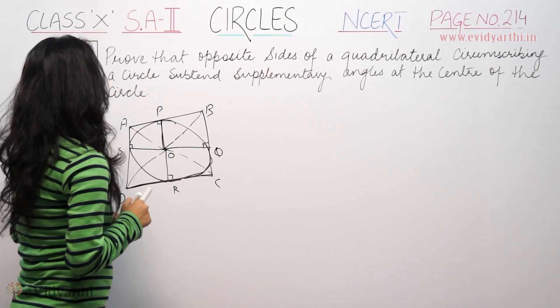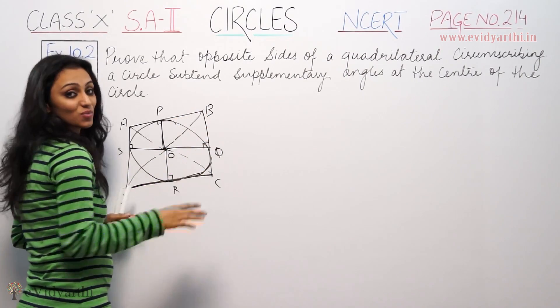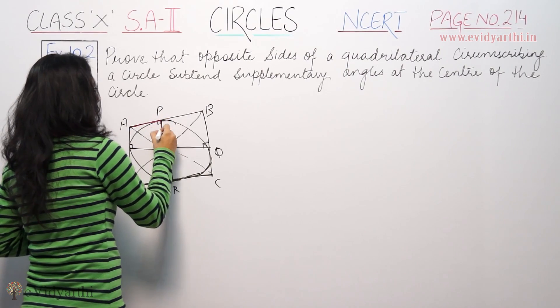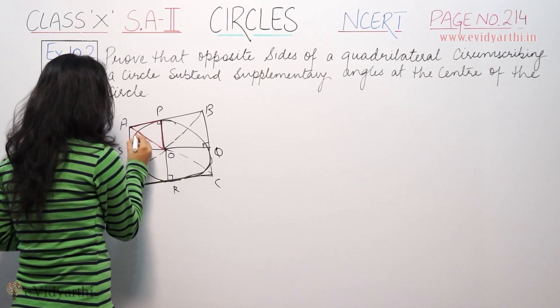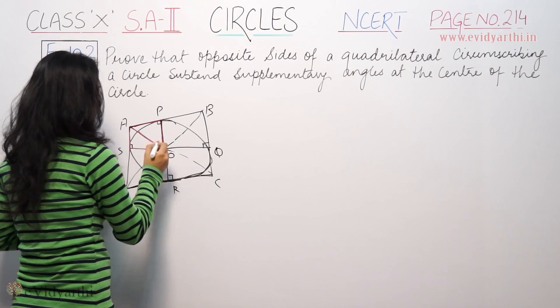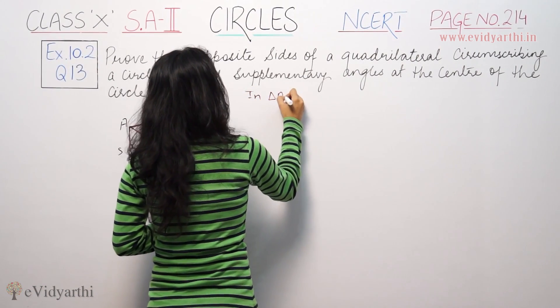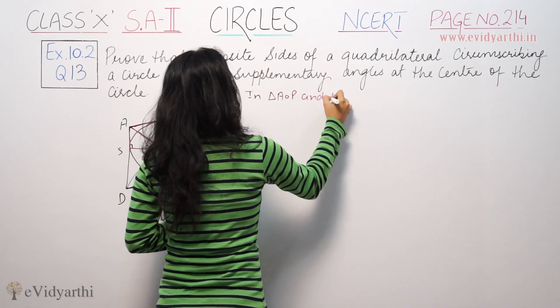Now the first thing we know is from an external point the tangents are equal in length. So we are trying to prove triangles AOP and AOS are congruent.